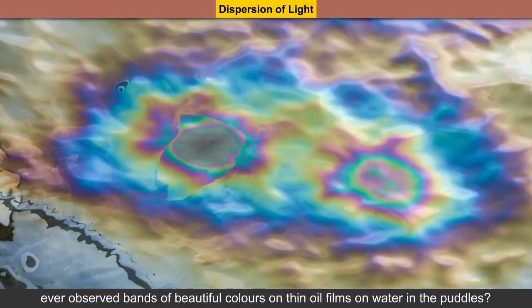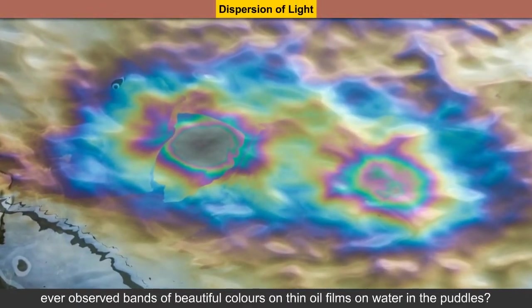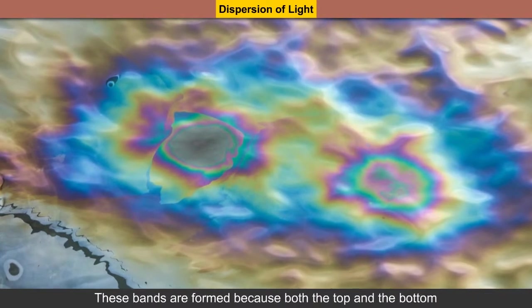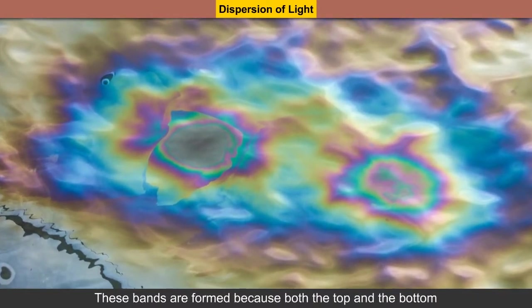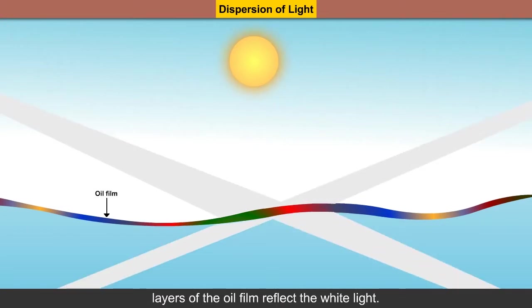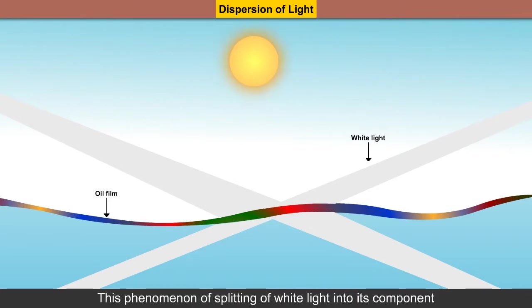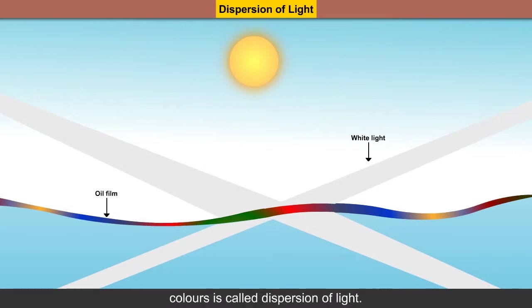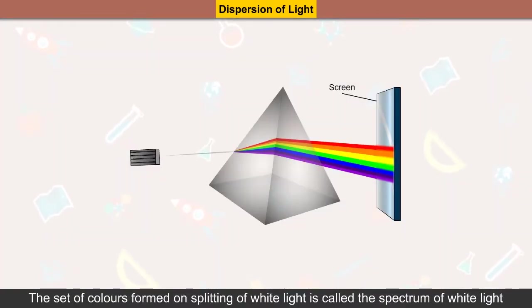Dispersion of light: have you ever observed bands of beautiful colors on thin oil films on water in puddles? These bands are formed because both the top and bottom layers of the oil film reflect white light, splitting it into various colors. This phenomenon of splitting of white light into its component colors is called dispersion of light, and the set of colors formed is called the spectrum of white light.